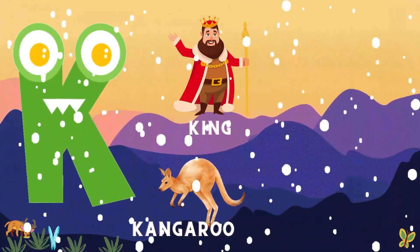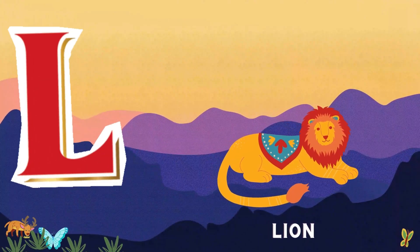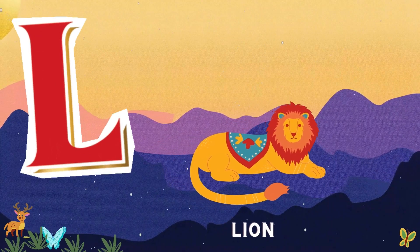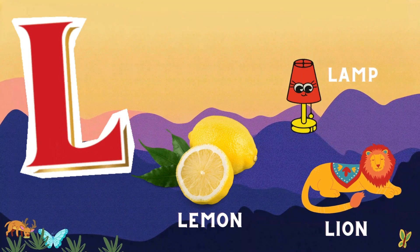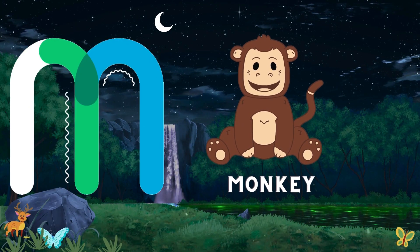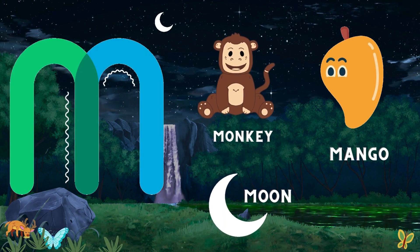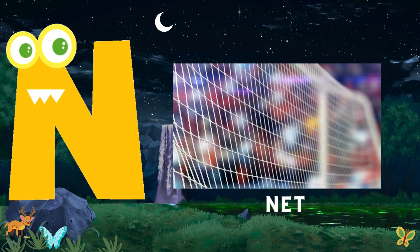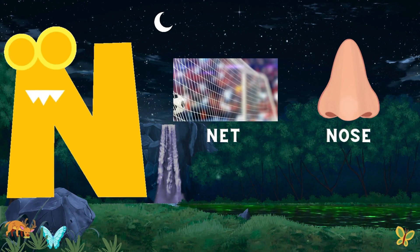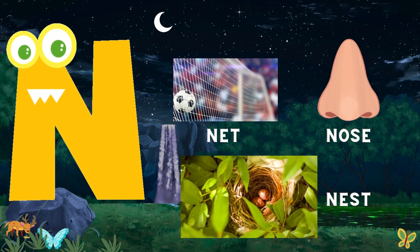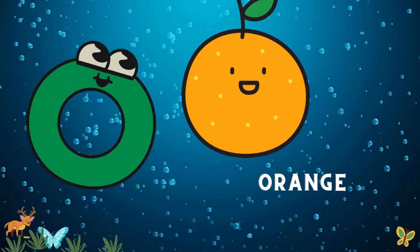K for kangaroo and kite. L for lion, lemon, and lamb. M for monkey, mango, and moon. N for net, nose, nest, and newspaper. O for...